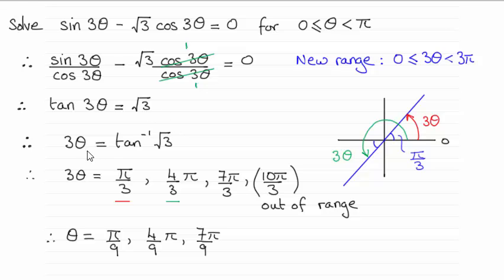Next, I need to take the inverse tan to both sides. That gives me three theta equals the inverse tan of root three. And at this point, we need to think about what our new range is going to be, because we're dealing with three theta, not theta.